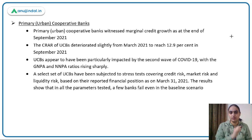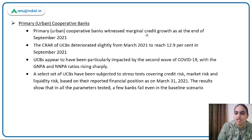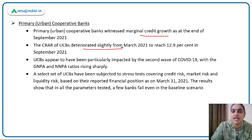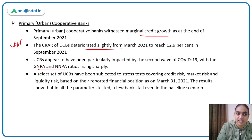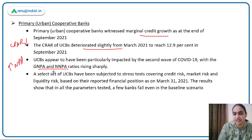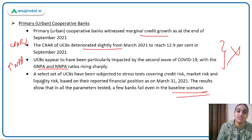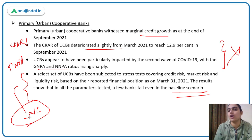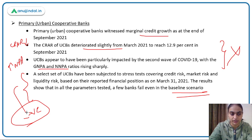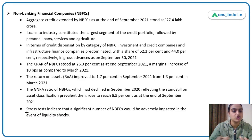Now coming to Primary Urban Cooperative Banks: they have witnessed marginal credit growth, their CRAR has deteriorated slightly, and their GNPA and NNPA ratios have risen — not good indicators. Stress tests have reported that these banks are likely to fail even in the baseline scenario, and in a stressful situation their position will deteriorate further. We need to work a lot on Primary Urban Cooperative Banks.